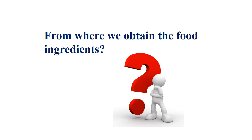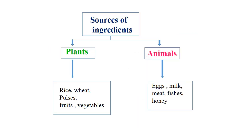So the question is: from where do we obtain food ingredients? The sources of ingredients include plants and animals. From plants we get ingredients like rice, wheat, pulses, fruits, vegetables, etc. From animals we get eggs, chicken, fish, milk, and meat.